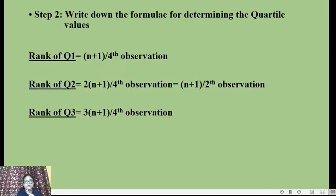We need to write down the formulas for determining the quartile ranks for this simple series. Rank of Q1 = (n + 1) / 4th observation. Rank of Q2 = 2(n + 1) / 4 = (n + 1) / 2nd observation. Rank of Q3 = 3(n + 1) / 4th observation. Here n, the total number of observations, is 15.